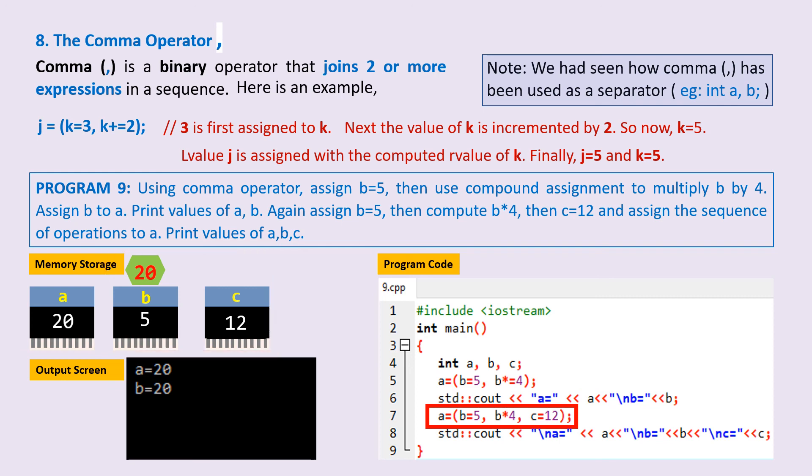So 12 will be assigned to a. Next, you just have to print the values of a on next line, b, and on next line, c.